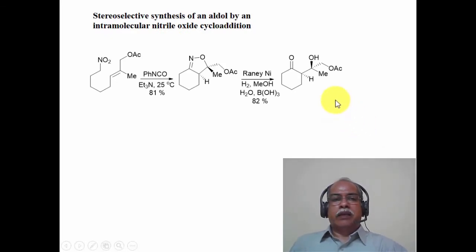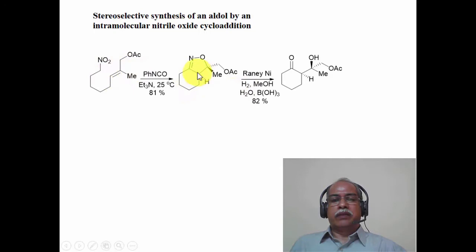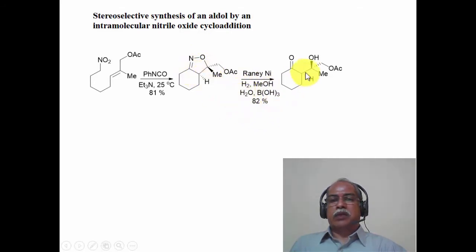In addition to beta-amino alcohol synthesis, one can also carry out the synthesis of an aldol by an intramolecular nitrile oxide cycloaddition reaction. The nitrile oxide is produced in situ from a primary nitro derivative with phenyl isocyanate. The intermediate nitrile oxide undergoes cycloaddition with an internal double bond, resulting in the formation of an isoxazoline derivative as the cycloadduct. Raney nickel hydrogenation of this derivative produces the beta-hydroxy imine, which is then hydrolyzed to produce the corresponding beta-hydroxy ketone — an aldol.